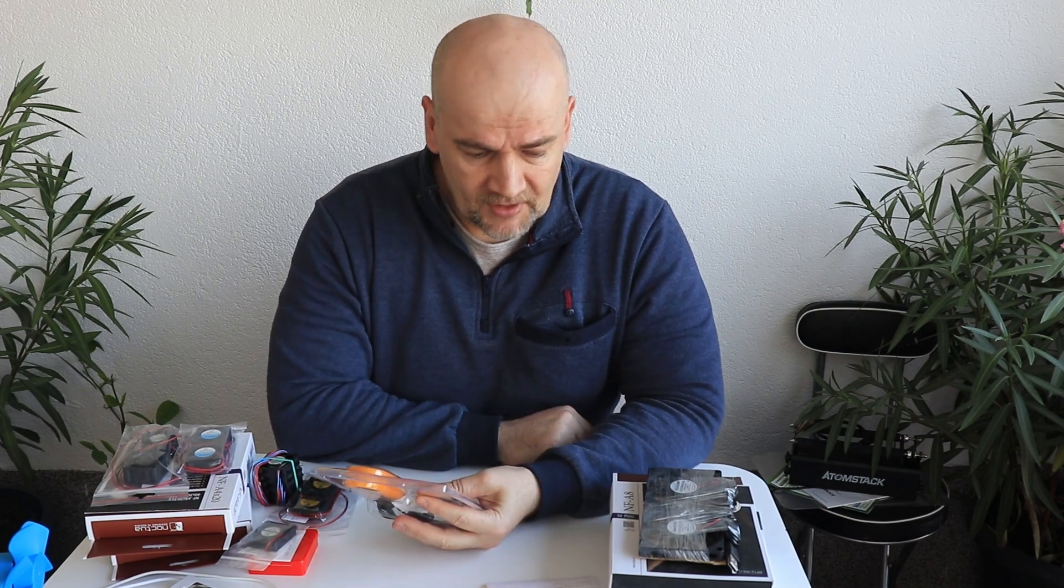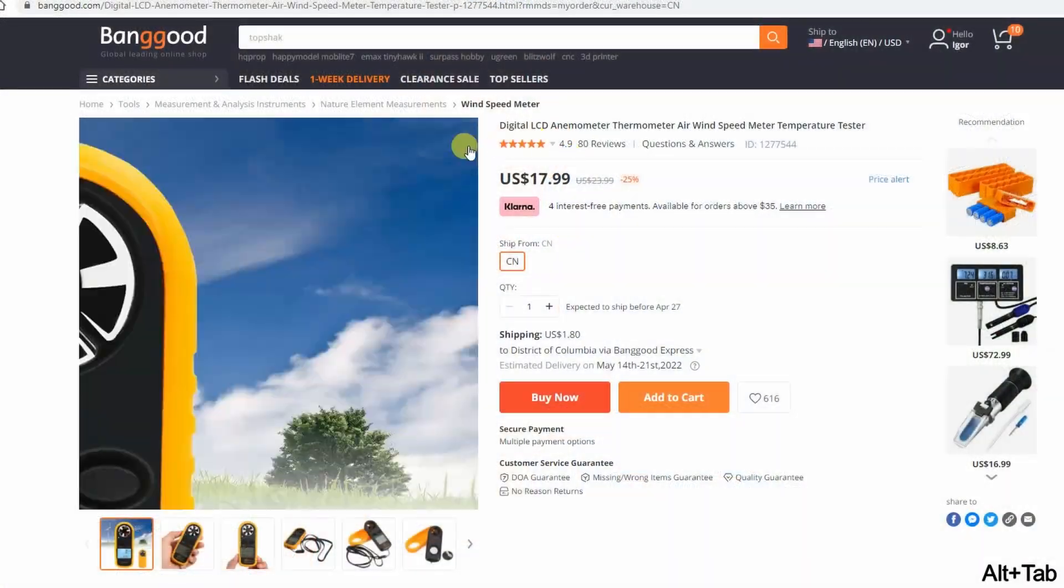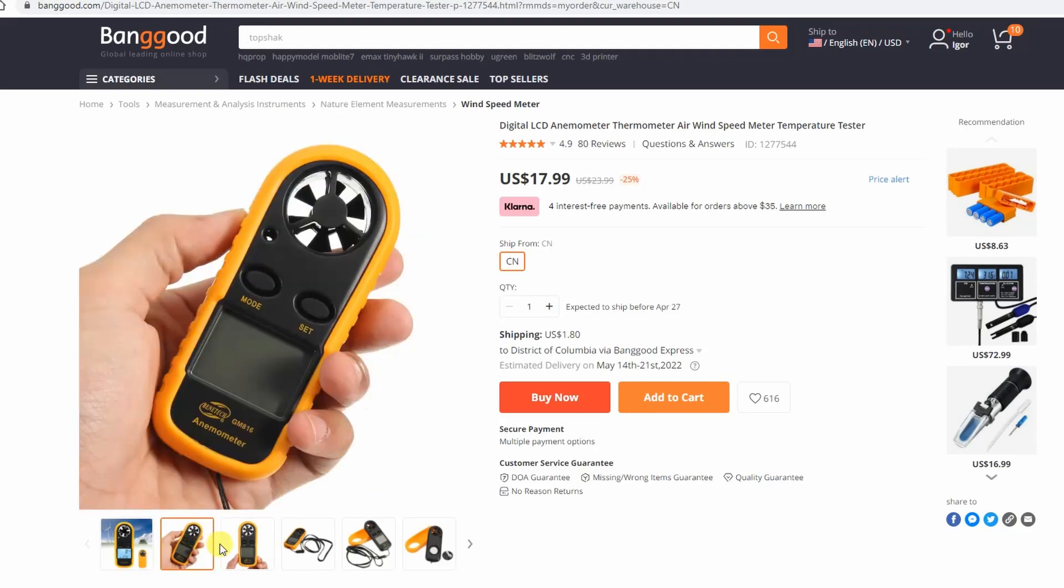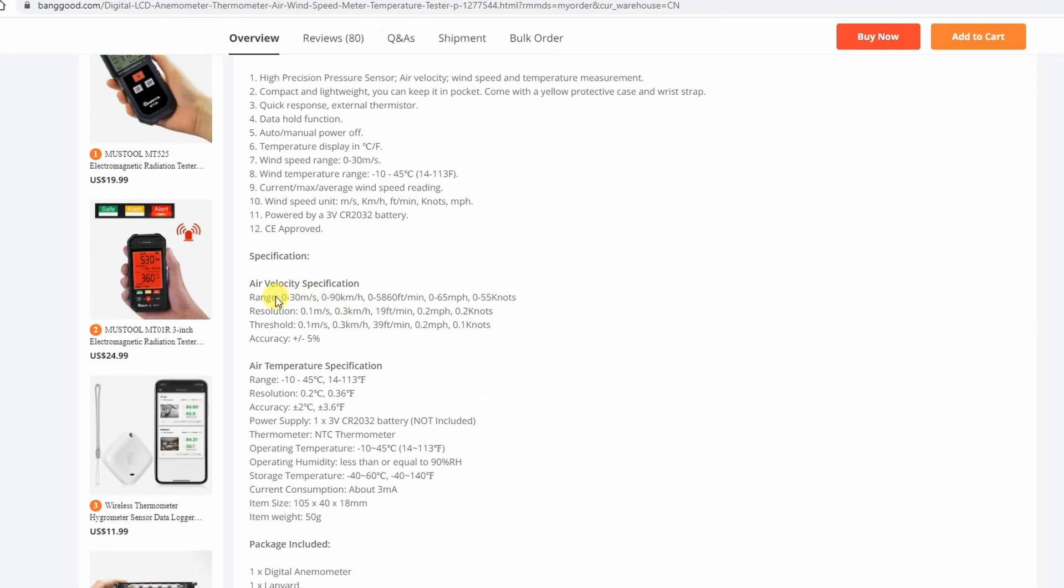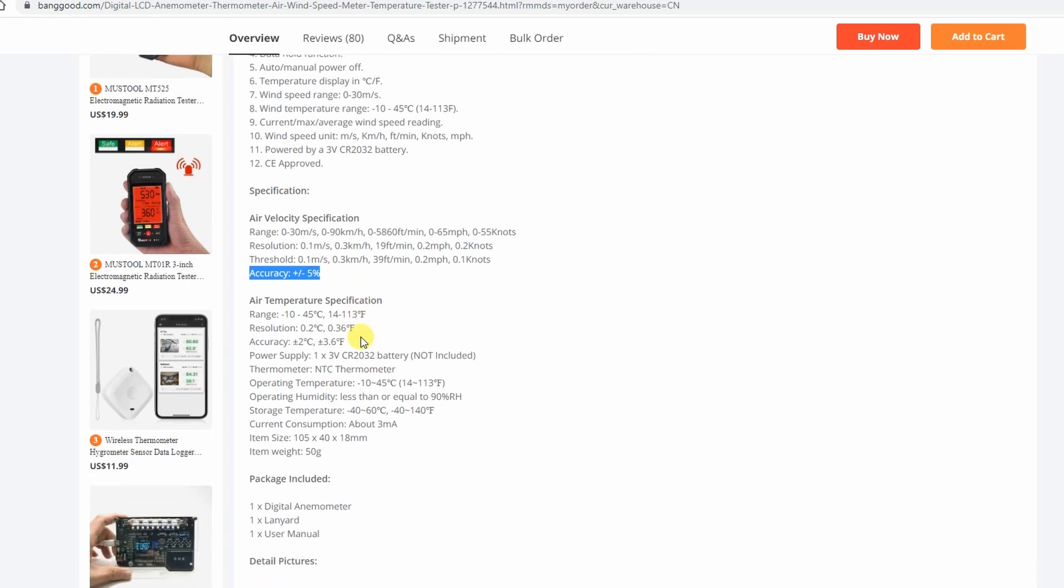The specifications: theoretically the range is between 0 and 30 meters per second, or 0 and 90 kilometers per hour. I can see some inaccuracy here in the specifications because the multiplier has to be 3.6 and not 3. Anyway, the accuracy is plus or minus five percent. About the temperature specification, it can work between minus 10 and plus 45 degrees Celsius.